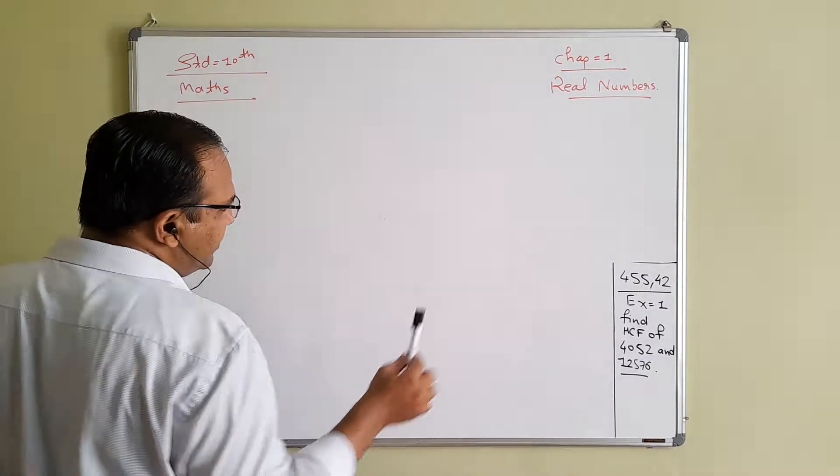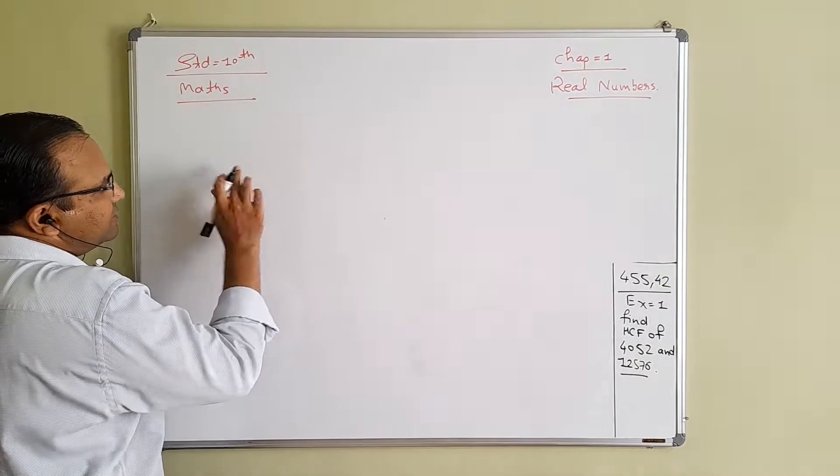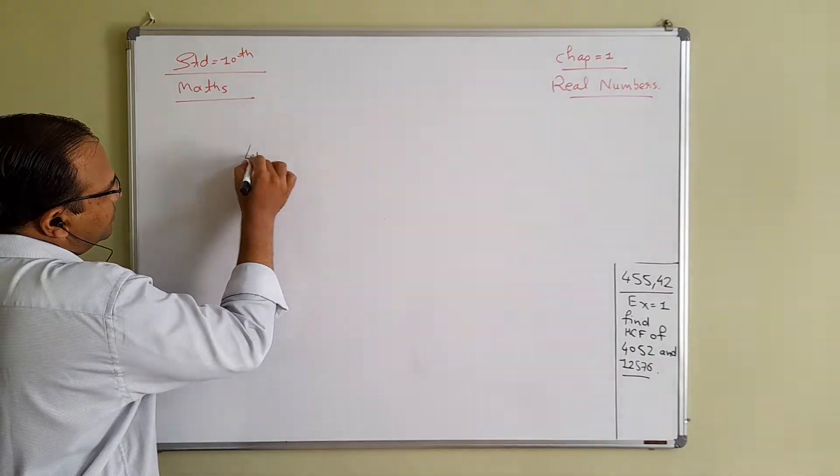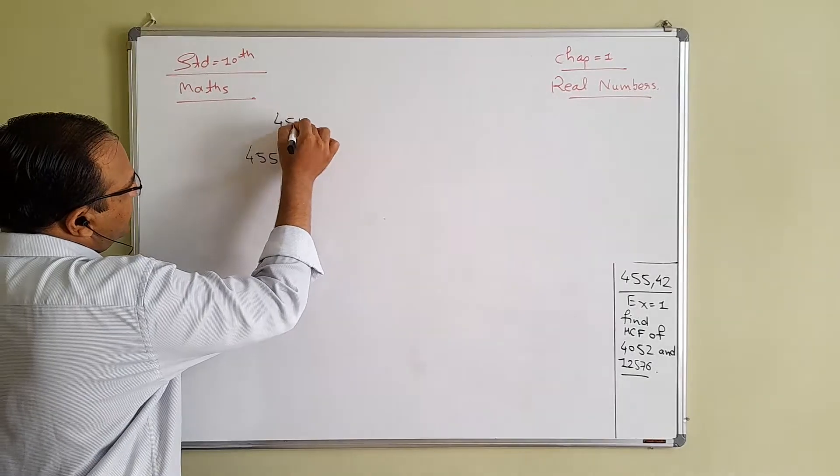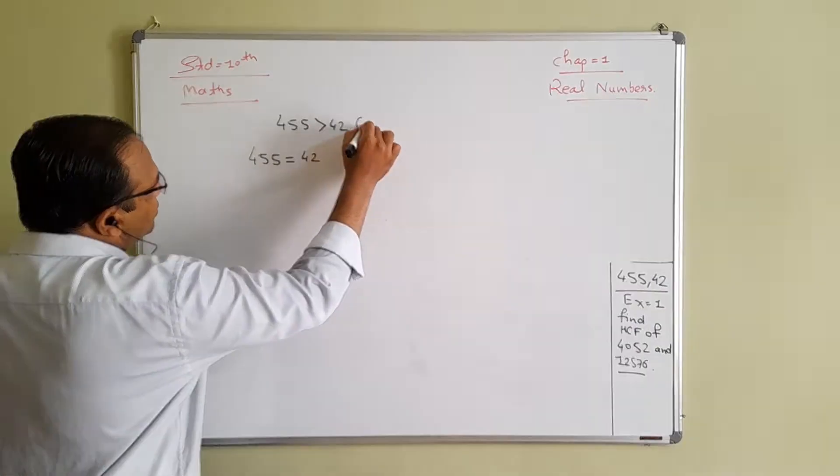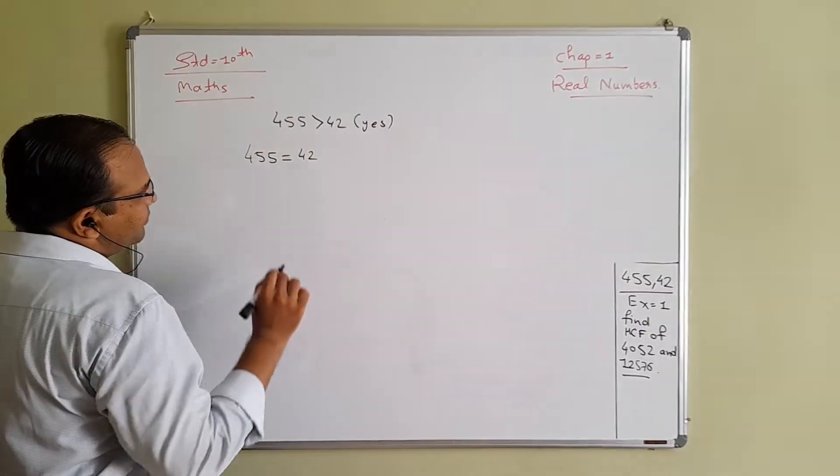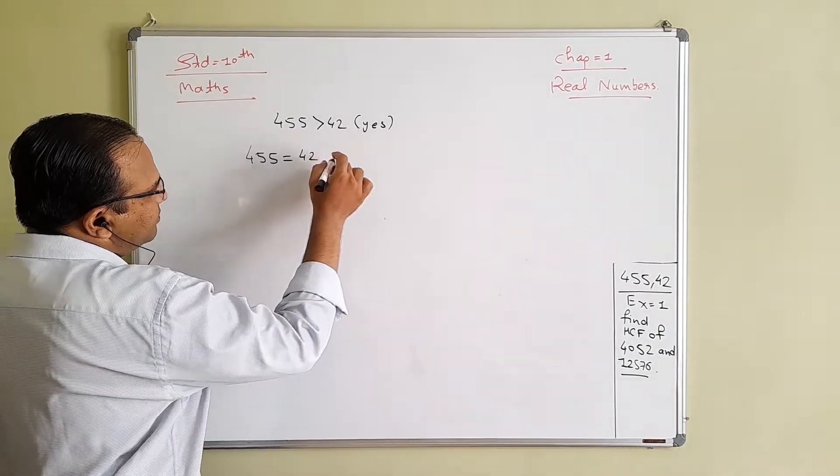Now we will see the case of 455 and 42. This is the question which is dual. 455 and 42. Here 455 is greater than 42, so yes it is possible. Now 455 is A and 42 is B.